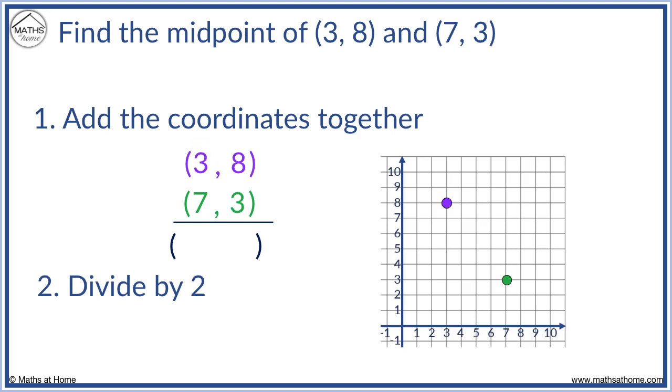3 plus 7 equals 10 and 8 plus 3 equals 11. We divide by 2. 10 divided by 2 equals 5 and 11 divided by 2 equals 5.5.